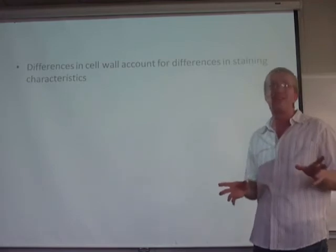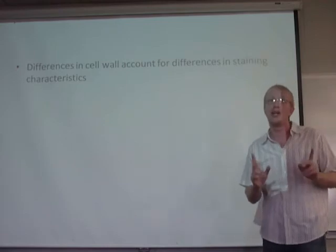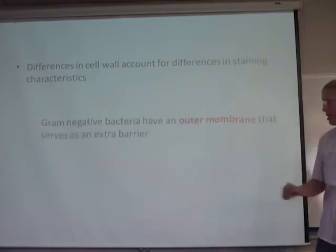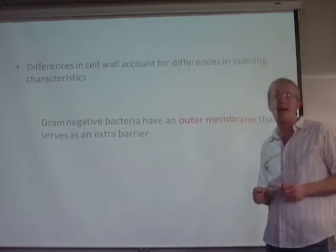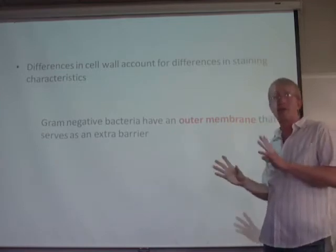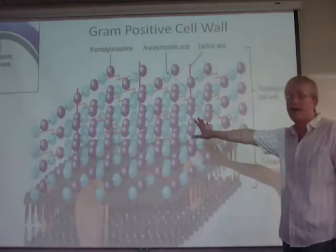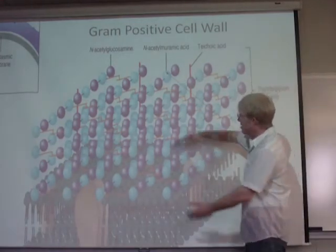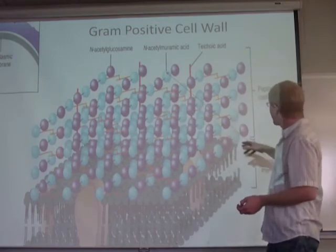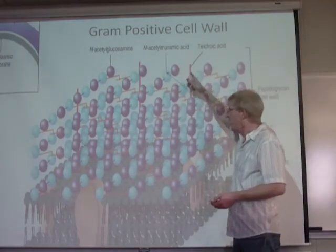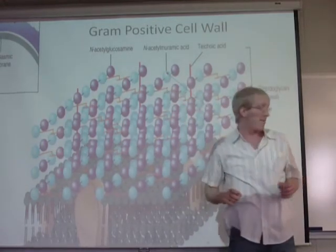Why do we see this differential staining? Because the cell walls of gram positive and gram negative bacteria are structurally different. Gram negative bacteria have a structure called an outer membrane that gram positive bacteria don't have. Gram positive bacteria have a very thick peptidoglycan cell wall as their outer layer, which contains a structure called teichoic acid that gives it its negative charge.